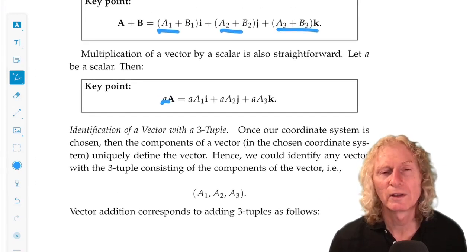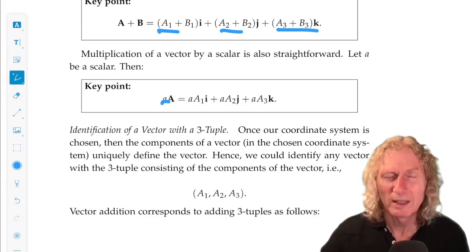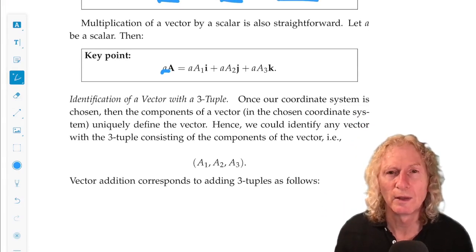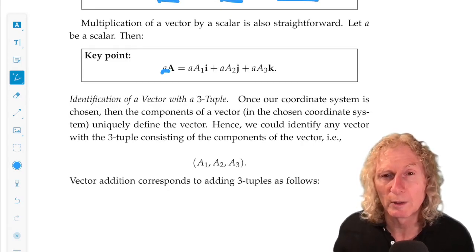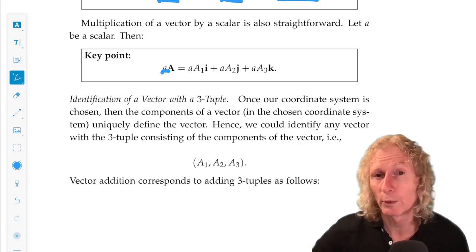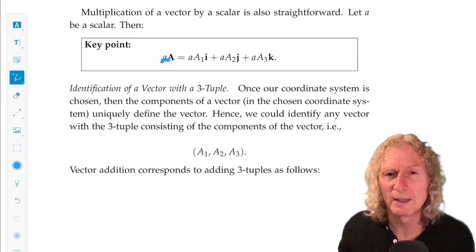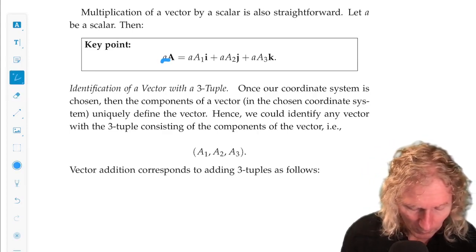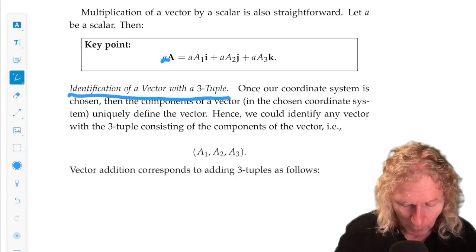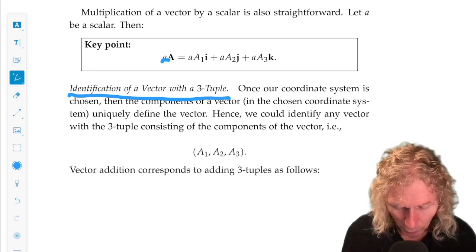Now, dragging along this i, j, and k is fine, and it's useful, but if it's understood that our fixed coordinate system is defined by these three mutually perpendicular or orthonormal vectors, we could just identify the vector with the components. We call that a three-tuple.